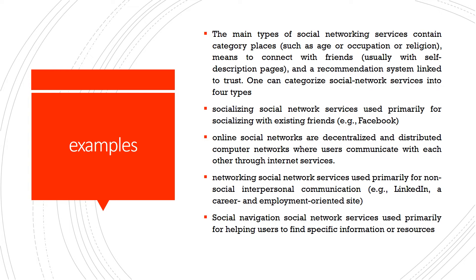Some famous examples: social networks connect friends and can be categorized by various factors such as age, occupation, and region. Socializing social network services include Facebook. Online social networks are decentralized and distributed, and we communicate with each other through internet services.